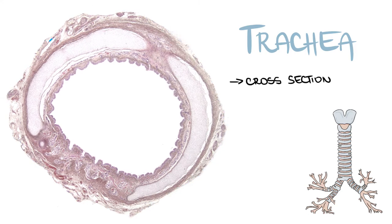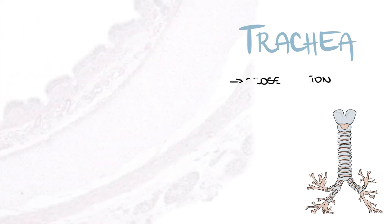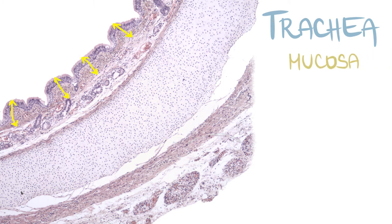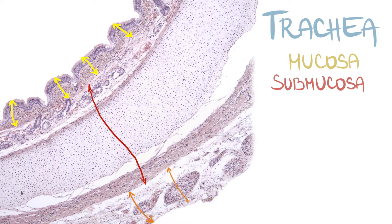We can distinguish some basic layers. There is a mucosa close to the lumen, with submucosa underneath. And then the outermost layer is adventitia.